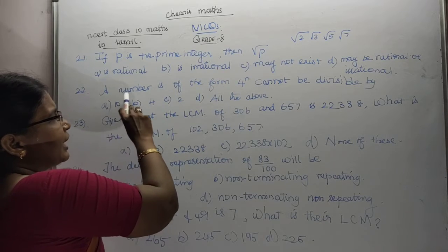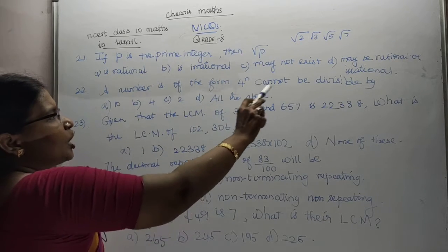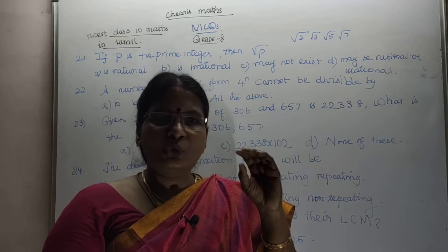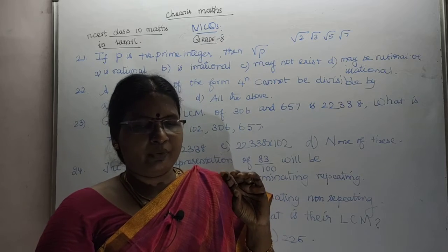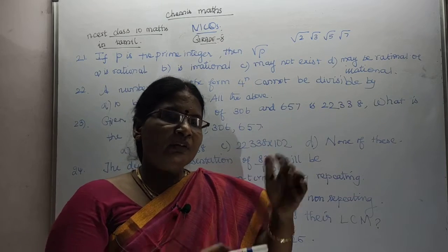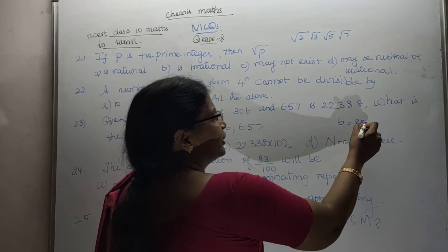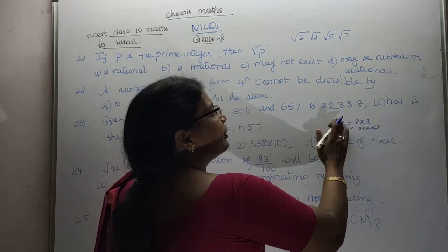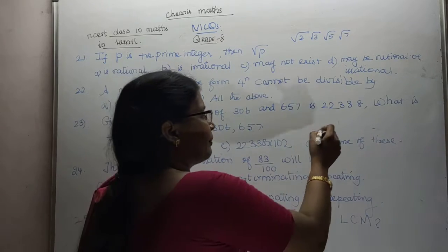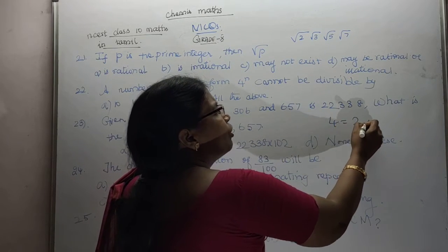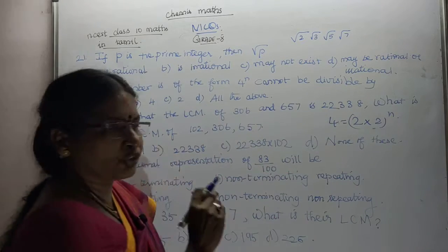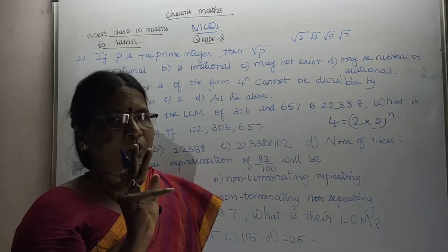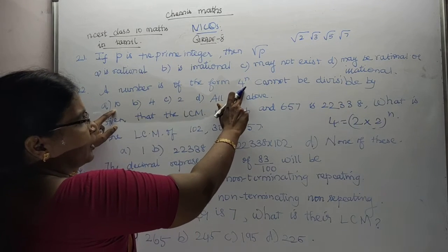Question 22: The number is of the form 4 to the power of n. Cannot be divisible by what? 6 to the power of n, 2 into 3 to the power of n, to the power of n. 6 to the power of n. It is only divisible by 2 and 4.